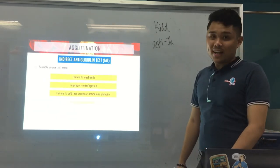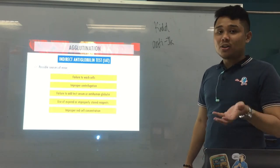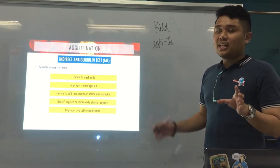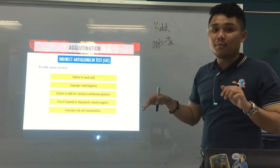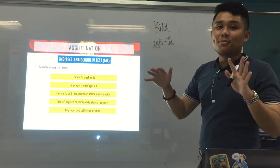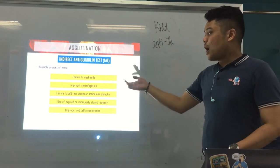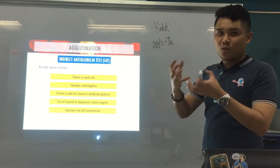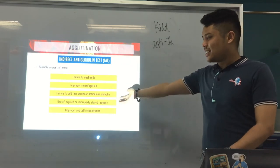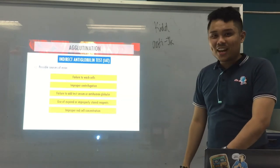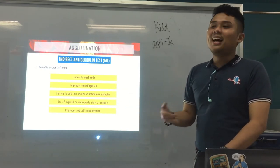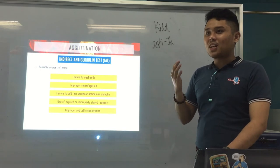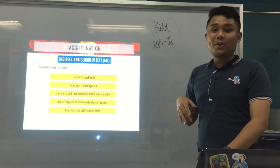Possible sources of error: failure to wash cells — if there are unbound antibodies, these can neutralize the AHG, so the AHG cannot bind to what's coated on the RBCs, and agglutination will not occur. Improper centrifugation — the reaction is not complete, so agglutination may not fully form. Failure to add test serum or anti-human globulin — without the reagent or serum, the test is incomplete and will not result in agglutination.